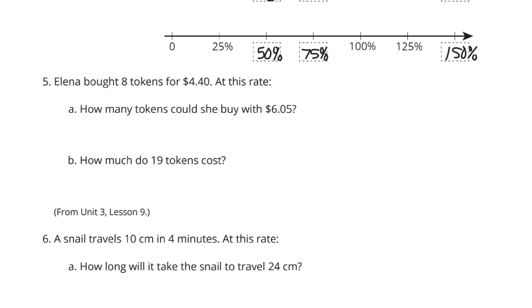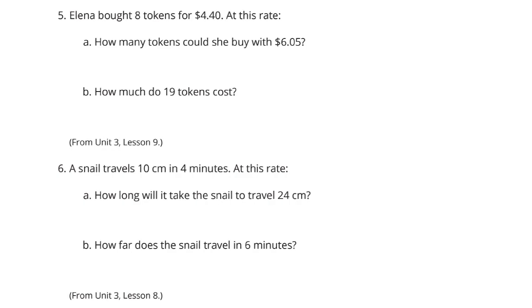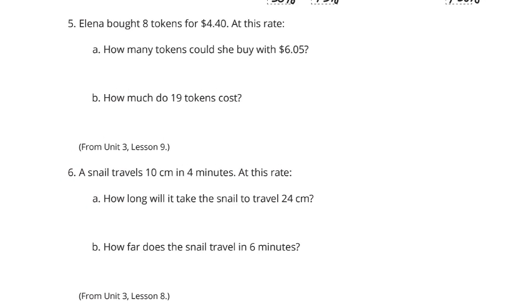All right. Question five. Elena bought eight tokens for $4.40. At this rate, how many tokens could she buy for $6.05? And this is a review question from lesson nine. And I like to make tables for these types of things. So if I were to make a table here that had token and money, and so I have eight tokens for $4.40. Now, we want to figure out $6.05.